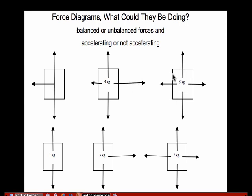Here's another diagram. When you look at this one it should look balanced — left equals right, up and down are equal. It's balanced. So we have to ask ourselves what it could be doing. It could be moving with a constant velocity or standing still. And if it's moving with a constant velocity, we don't even know if it's going left or right. So this thing could really be doing three things: moving left at constant velocity, moving right at constant velocity, or standing still.